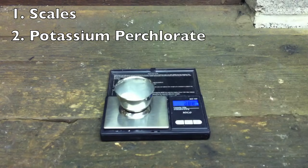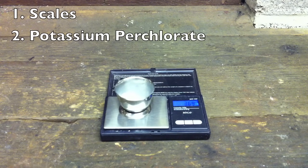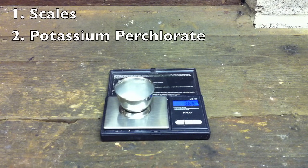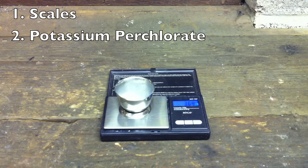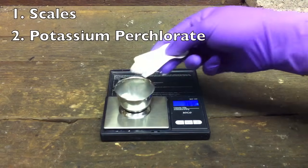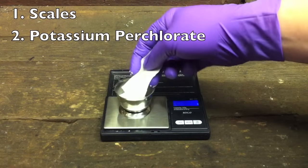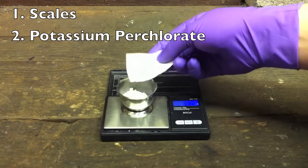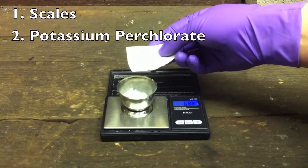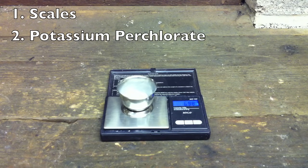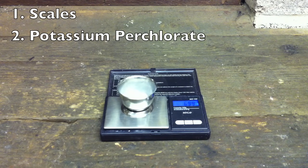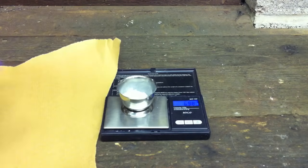You want 7 grams of potassium perchlorate. That's just about 7 grams. Now transfer the 7 grams onto a sheet of paper.